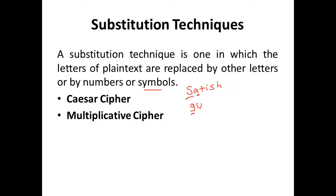If you're going to replace every character with another character, it is called mono-alphabet substitution, because we're taking every single alphabet and substituting it with another character. We're going to look at two mono-alphabet substitutions: Caesar cipher and the multiplicative cipher.